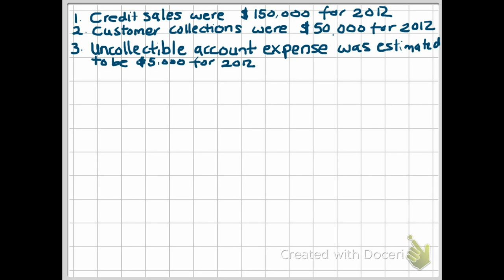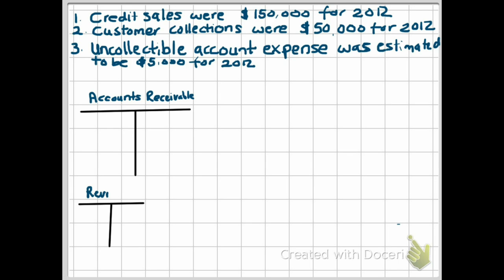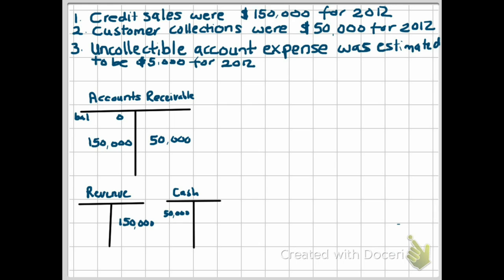Let's look at the first two transactions. Collections for credit sales involve accounts receivable and revenue. You're going to debit accounts receivable and credit revenues for $150,000. We're going to assume that the opening balance of accounts receivable is zero. Next, for collections of $50,000, you're going to debit cash for $50,000 and credit accounts receivable for $50,000.